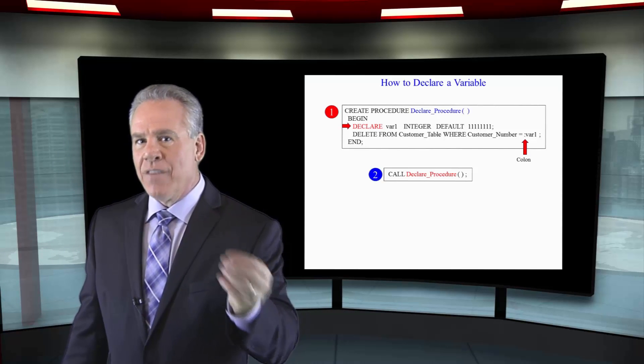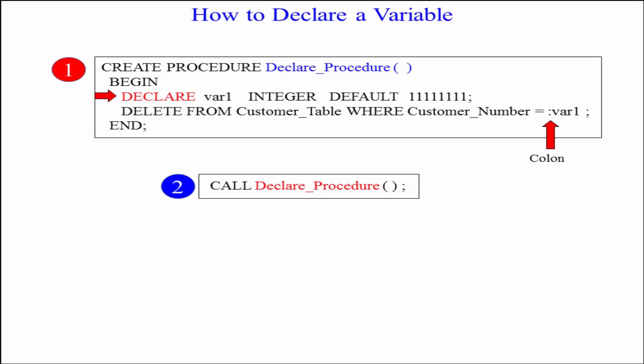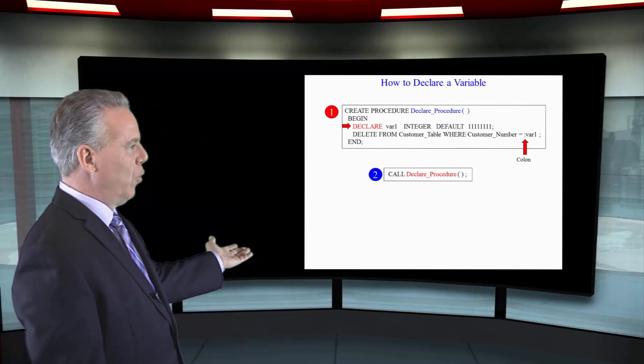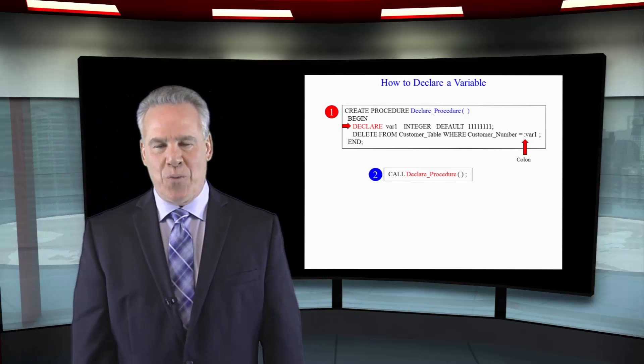Now that I've declared that variable, I can then say delete from the customer table where customer number equals colon var1, once again referring to that variable. We compile this — it's ready to roll. Of course we call it, and now it works.